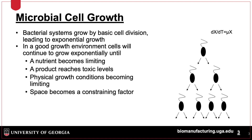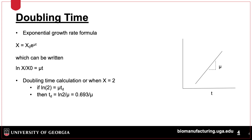Cells grow through division, which results in exponential growth. This growth can be limited when a nutrient is used up, as well as physical limitations of having too many cells in a fermenter. Cells increase according to the formula shown here, where an initial amount of cells increases by a factor of E to the mu T, where mu is the growth rate and T is time.